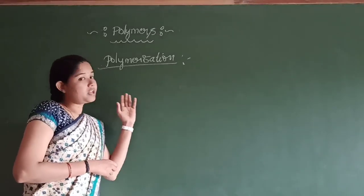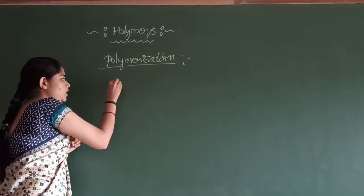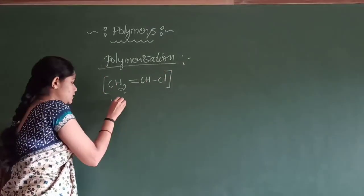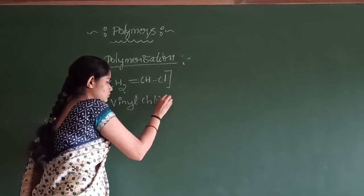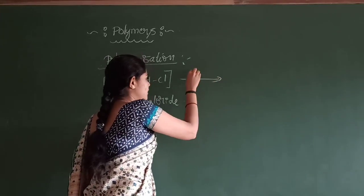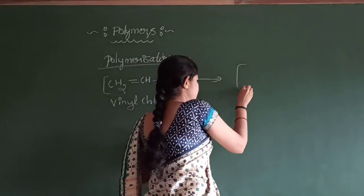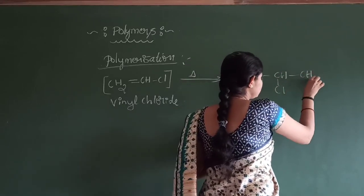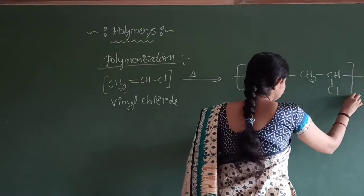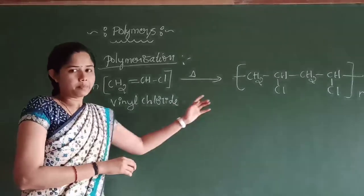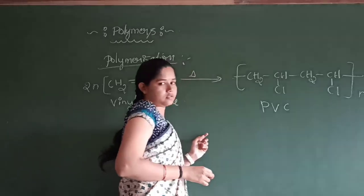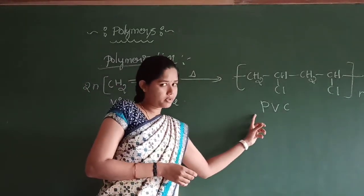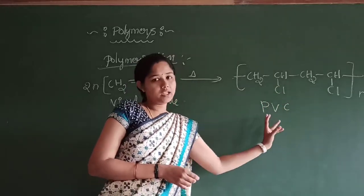For example, consider the polymerization of vinyl chloride. Vinyl chloride is CH₂=CHCl. When vinyl chloride is heated under pressure, it undergoes polymerization to give polyvinyl chloride (PVC), which is a well-known polymer.